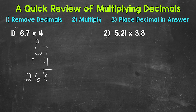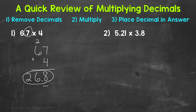Now we're done multiplying, so we can place our decimal in our answer. We take a look at the original problem and see how many digits are behind or to the right of a decimal. We have this 7 right here to the right of a decimal — that's 1 digit. So our answer is going to have 1 digit to the right of the decimal, which is this 8. We place our decimal in between the 6 and the 8. Our final answer: 26 and 8 tenths.